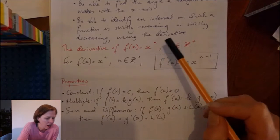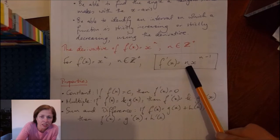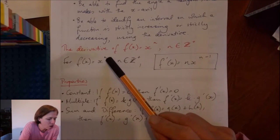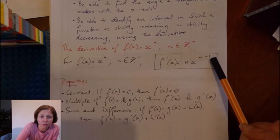In other words, I take the power of the original function, and it becomes a constant out the front. And then I subtract 1 from the power, and that's the new power of the derivative.